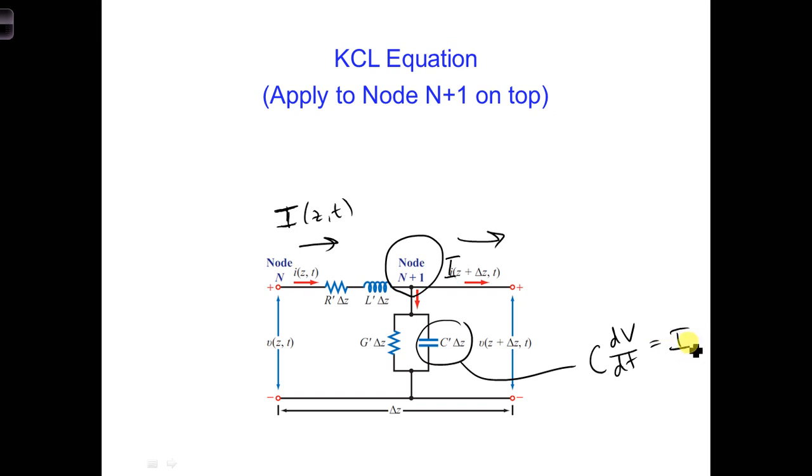Now the capacitance of a capacitor is in units of farads, but the capacitance of the transmission line equivalent circuit, C prime, is in units of capacitance per unit length. Therefore, in the KCL equation, we need to multiply C prime by delta Z to get the total capacitance for one equivalent circuit. We're going to put that in here for C.